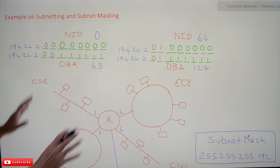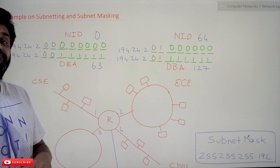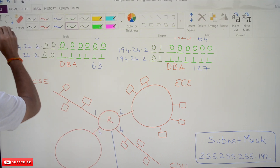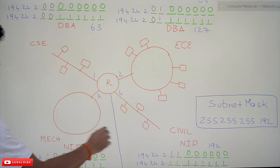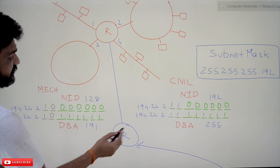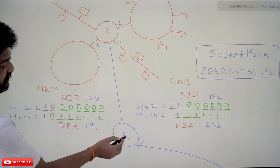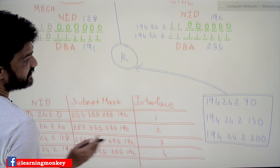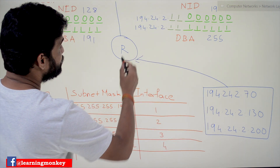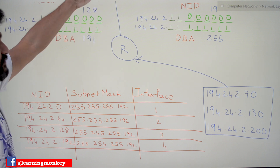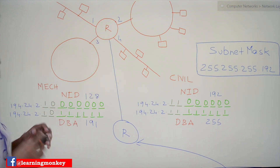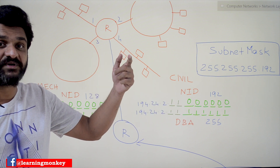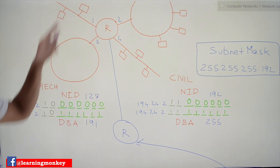We are going to take the same example and see what happens when different messages arrive at this router. This is the private network built by the university. What if messages with different IP addresses arrive at this outer router — outside of this network? How is this router going to decide to which subnetwork a packet has to be transferred? That decision is made using the subnet mask.